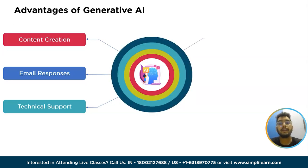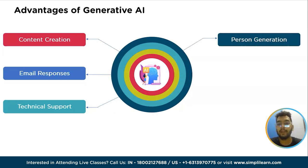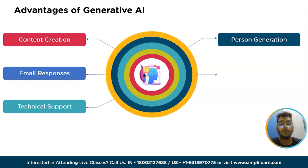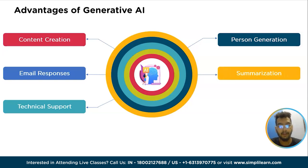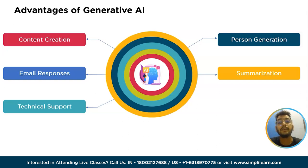The fourth benefit is realistic person generation. By leveraging generative AI, it becomes possible to create realistic representations of people, enabling applications like virtual characters or avatars. The fifth benefit is coherent information summarization — generative AI can summarize complex information into a coherent narrative, distilling key points and making it easier to understand and communicate complex concepts. The implementation of generative AI offers a range of potential benefits, streamlining processes and enhancing content creation across various areas of business operation.